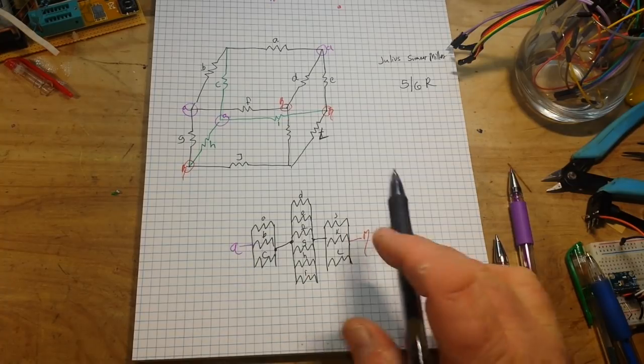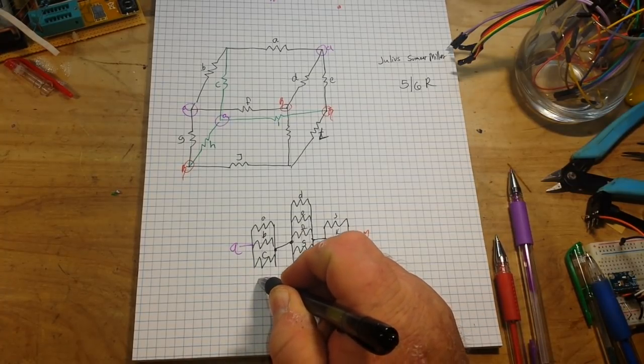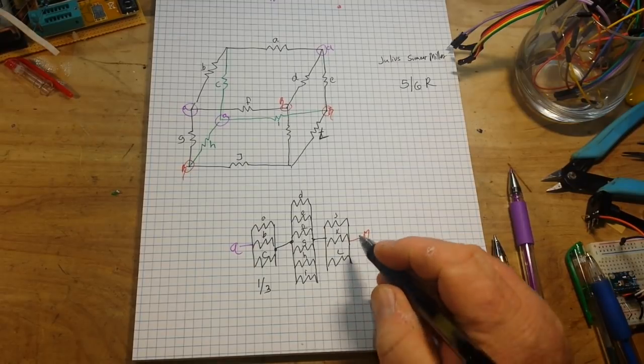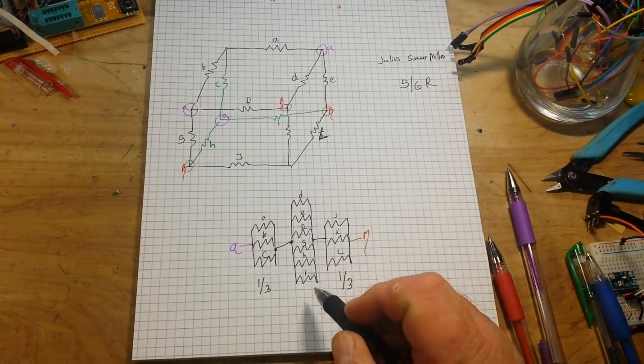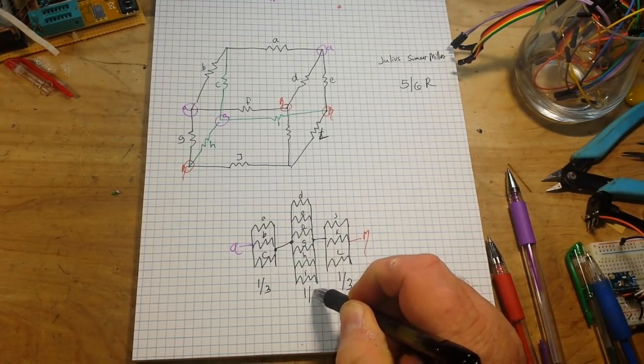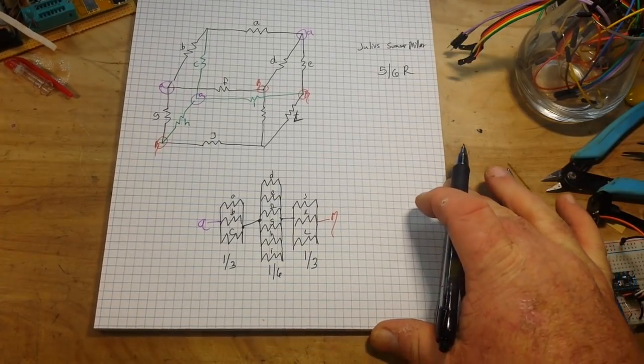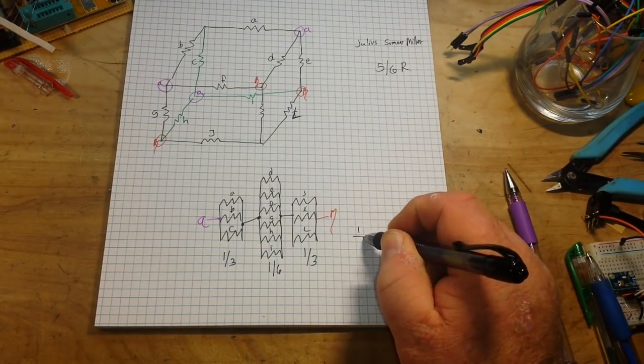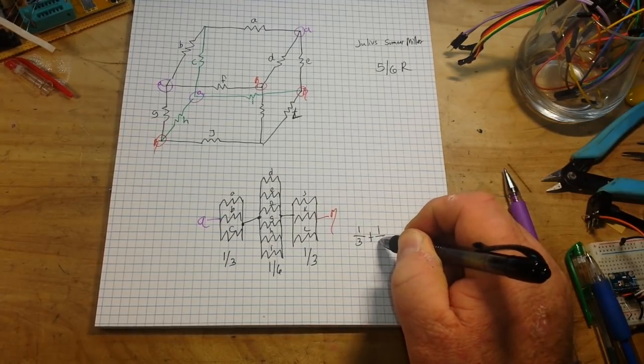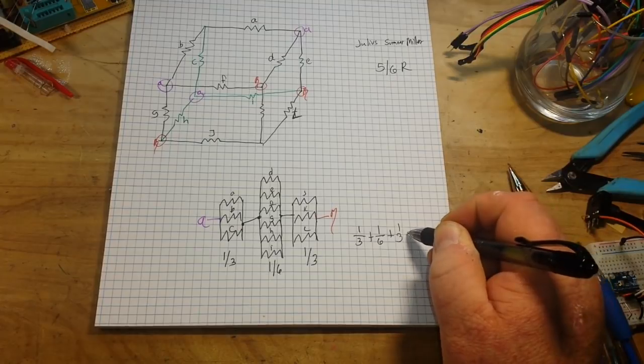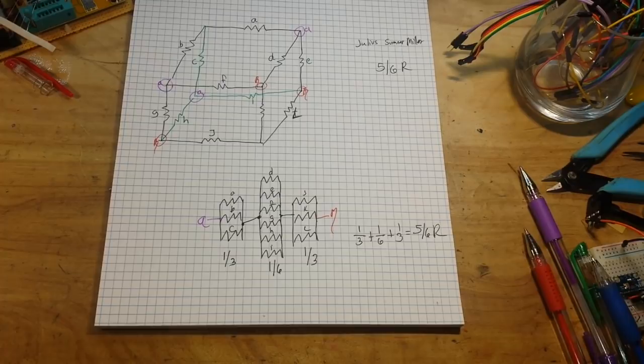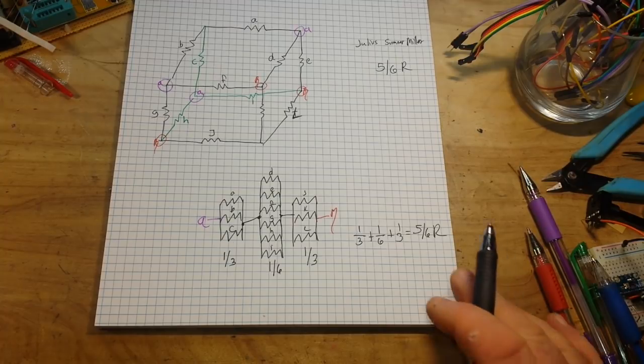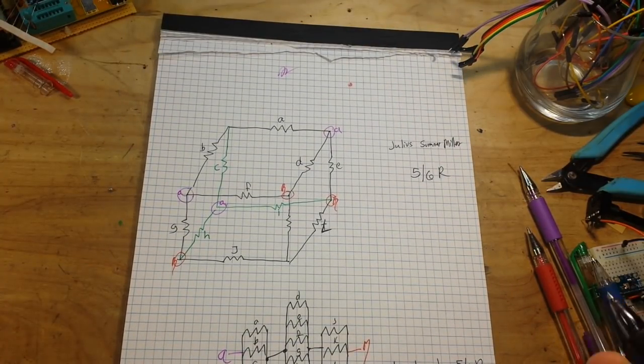So then we get to short out these and we get one-third. Same over here, one-third. And what's left in the middle is one-sixth. A little bit of mathematics tells us that one-third plus one-sixth plus one-third equals five-sixths. And that's the solution. It's really that simple. And it's all based on Kirchhoff's current law.